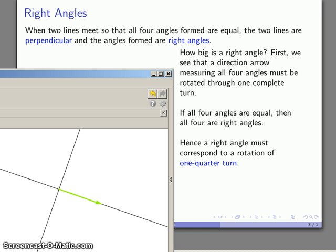And so that means that if these are in fact equal, since I have a full turn that's distributed among four pieces, then each of these must represent one quarter of a full turn. So each of those right angles is a quarter turn, a quarter rotation of our direction arrow.